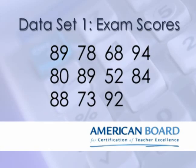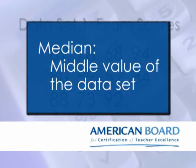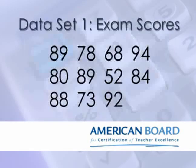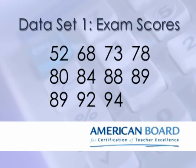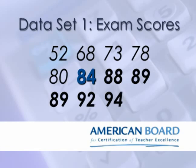You could also describe this set of data using the median. The median is the middle value of the data. To make things easier, I'm going to put the data values in order first, from lowest to highest. There are 11 data values in this set. 11 is an odd number, so that means this data set will have a middle number, in this case 84. You can tell it's the middle number because there are 5 data values less than 84 and 5 data values greater than 84.